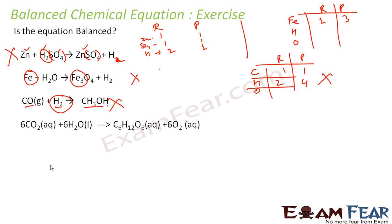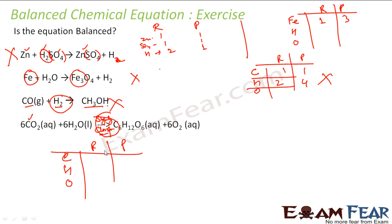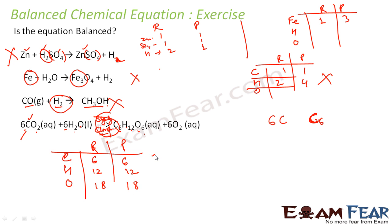Let's take the photosynthesis equation: 6CO2 + 6H2O → C6H12O6 + 6O2, in presence of sunlight and chlorophyll. Carbon: 6 in reactant, C6 = 6 in product — balanced. Hydrogen: 6×2 = 12 in reactant, H12 = 12 in product — balanced. Oxygen: 6×2 + 6×1 = 12+6 = 18 in reactant; 6+12 = 18 in product — balanced. So all elements are balanced in this equation.